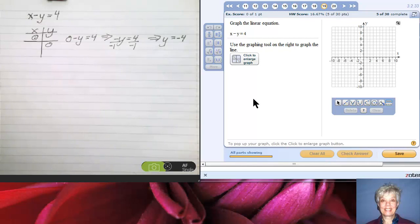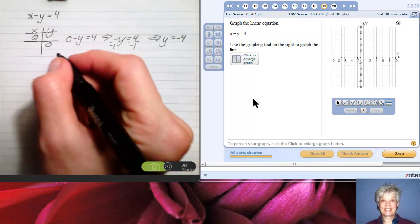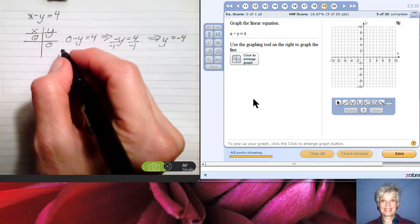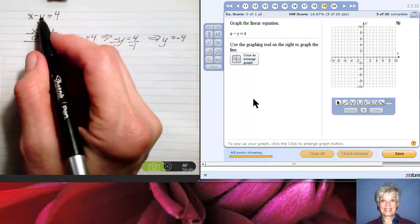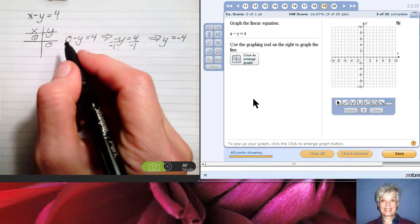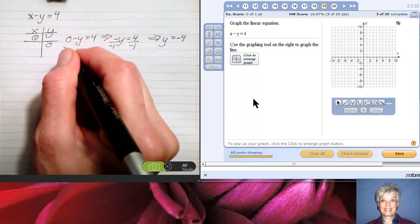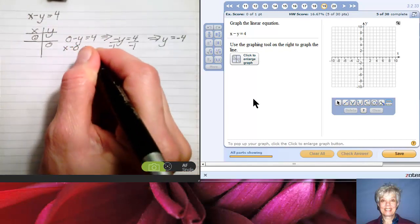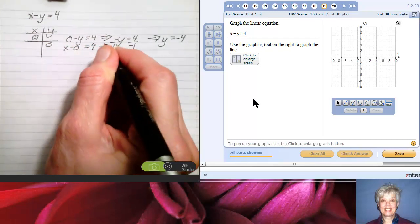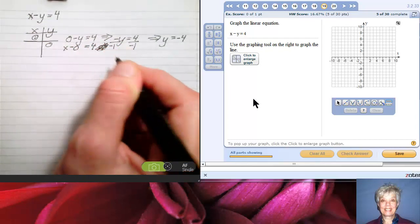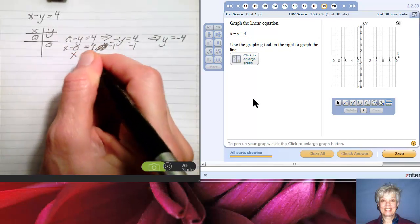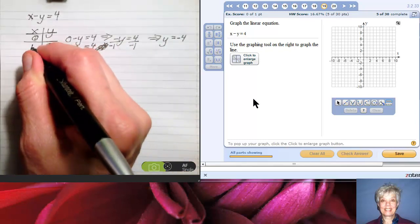Now, that's one point. What about the other one? Well, let's do it. If y is 0, what is x? I'll have x minus 0 equals 4, which means x equals 4. That was quick and dirty.